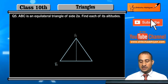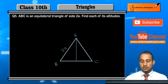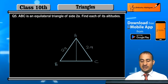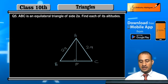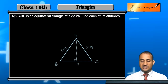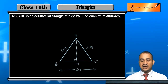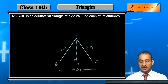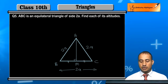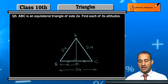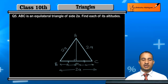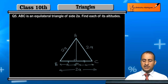Take equilateral triangle ABC where each side is 2a. I have drawn altitude AM from vertex A. This AM will bisect BC. Since BC is 2a, after bisecting, BM and CM will both be equal to a.